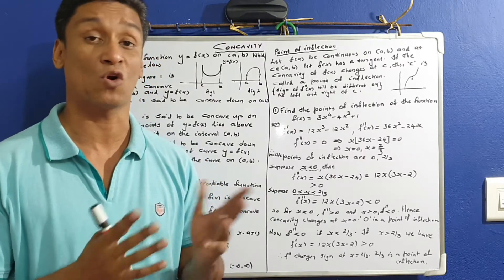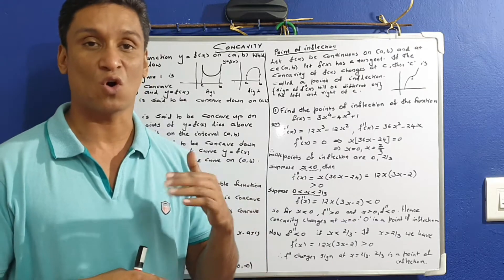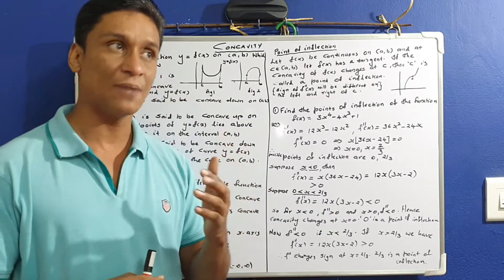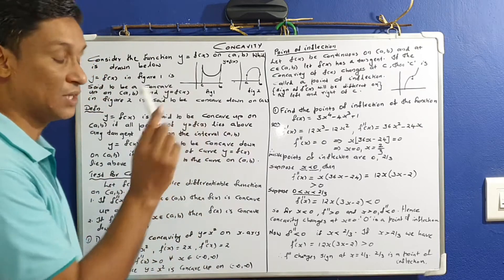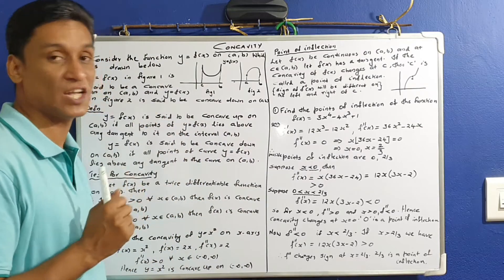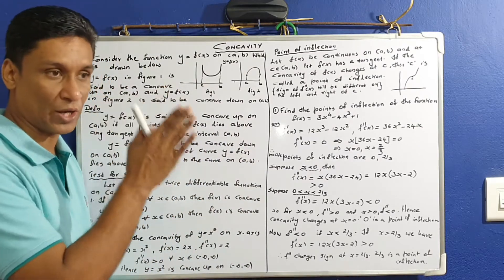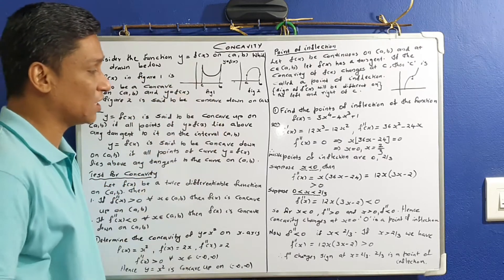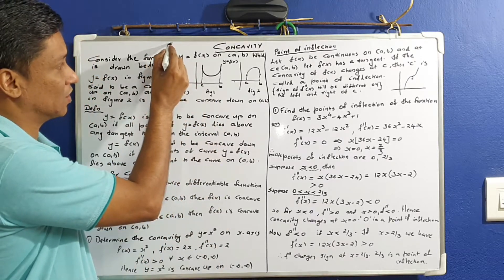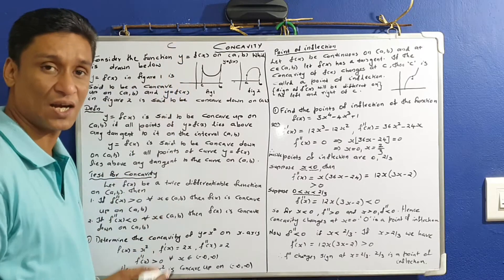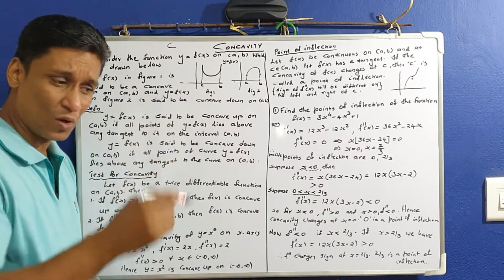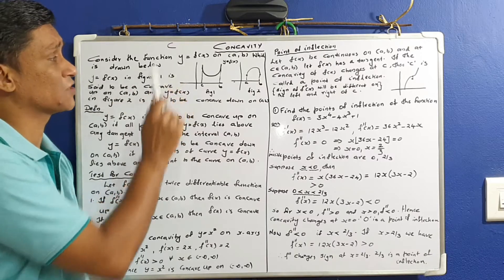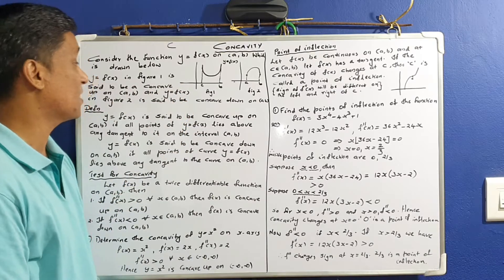Concave, Convex, Concave Lens, Convex Lens — this concept is called Concavity. Cave is called Concave, Concave is called Caves.